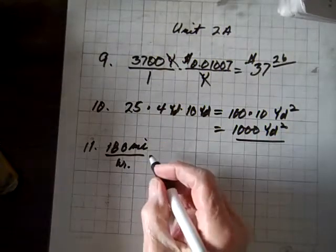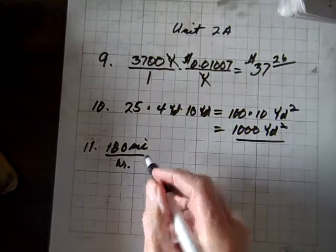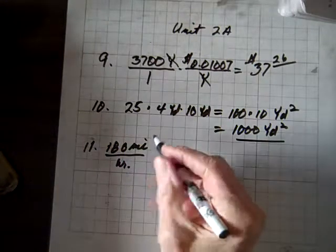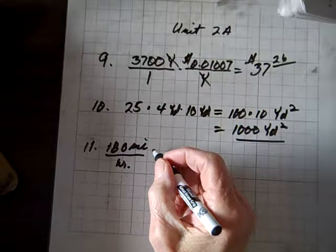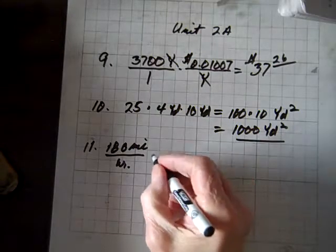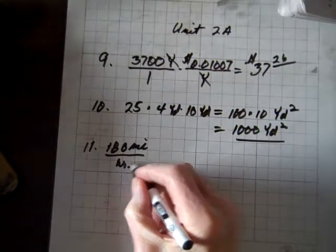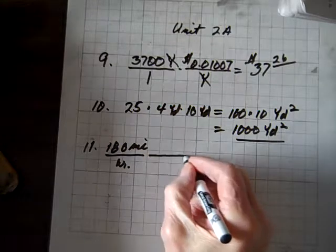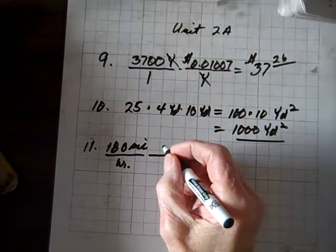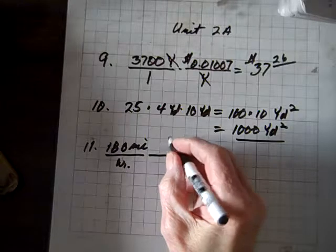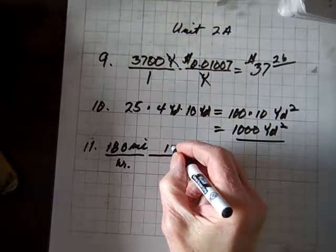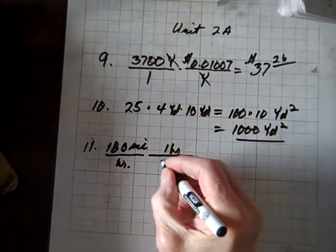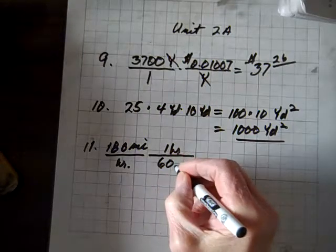So for 11, we're told a car is driving 180 miles per hour. We need to convert that to miles per minute, so that means we have to convert hours to minutes. We know in one hour there's 60 minutes.